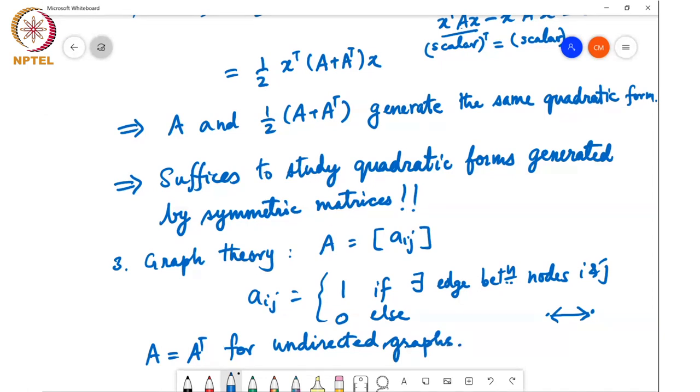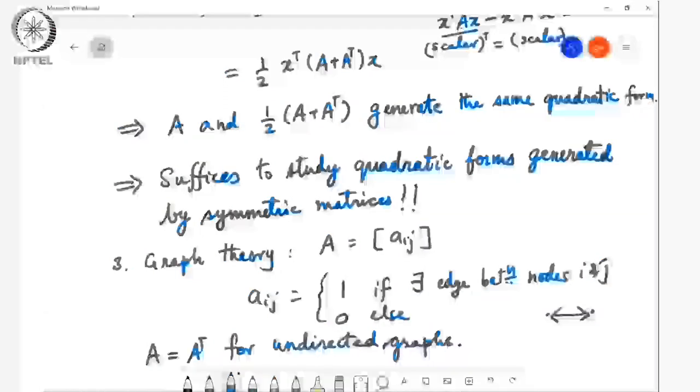These are three examples where symmetric matrices arise. With this background, we'll start in the next class studying Hermitian and symmetric matrices. They have lots of very intricate, very beautiful properties.